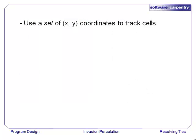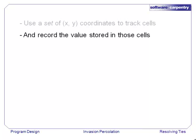We're going to use a set of tuples. Each tuple will be the xy coordinates of one cell that's on the boundary that has the current lowest value. Of course, we'll have to record the current lowest value that we've seen as well.